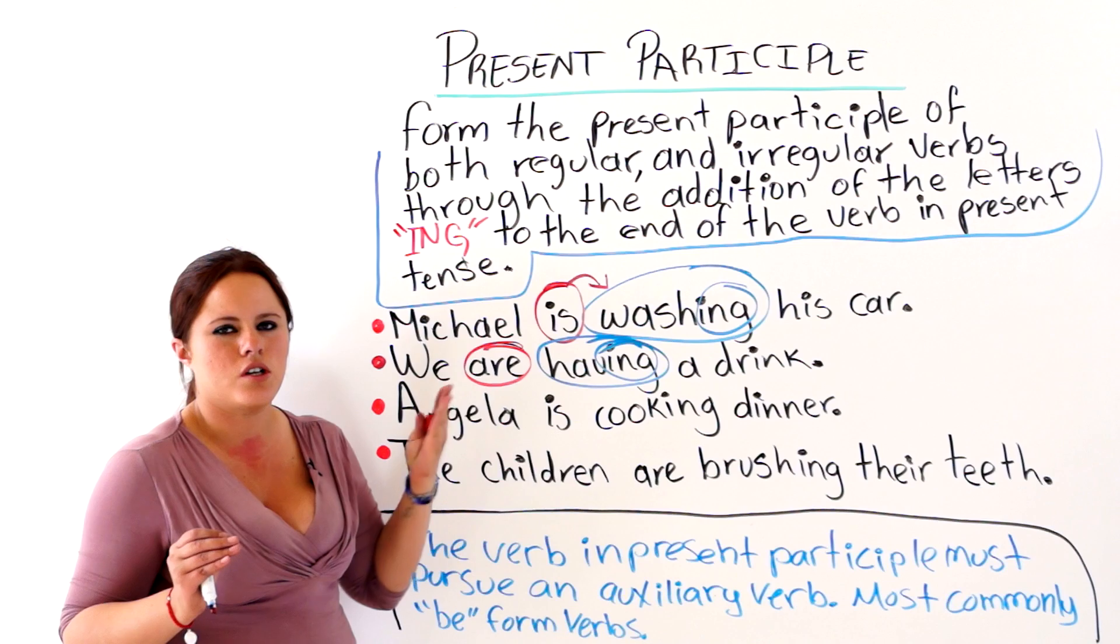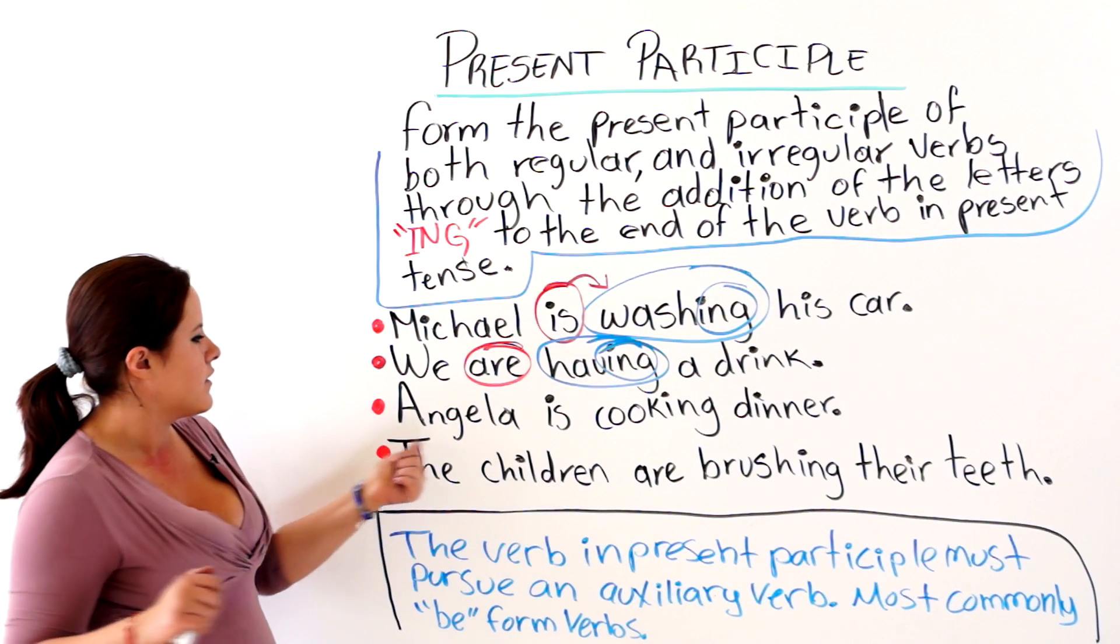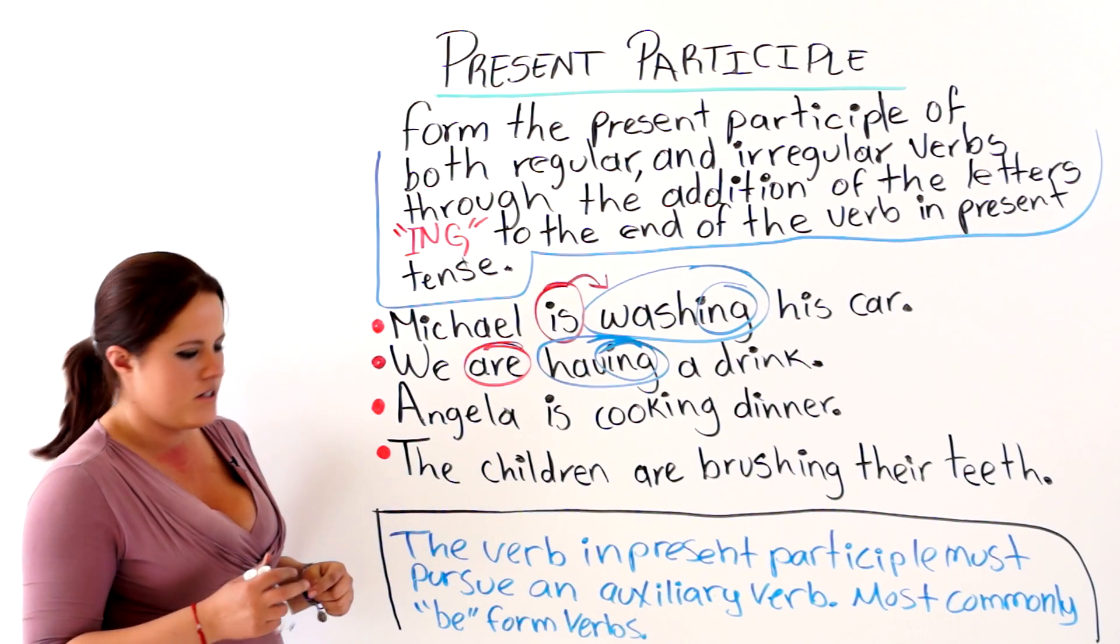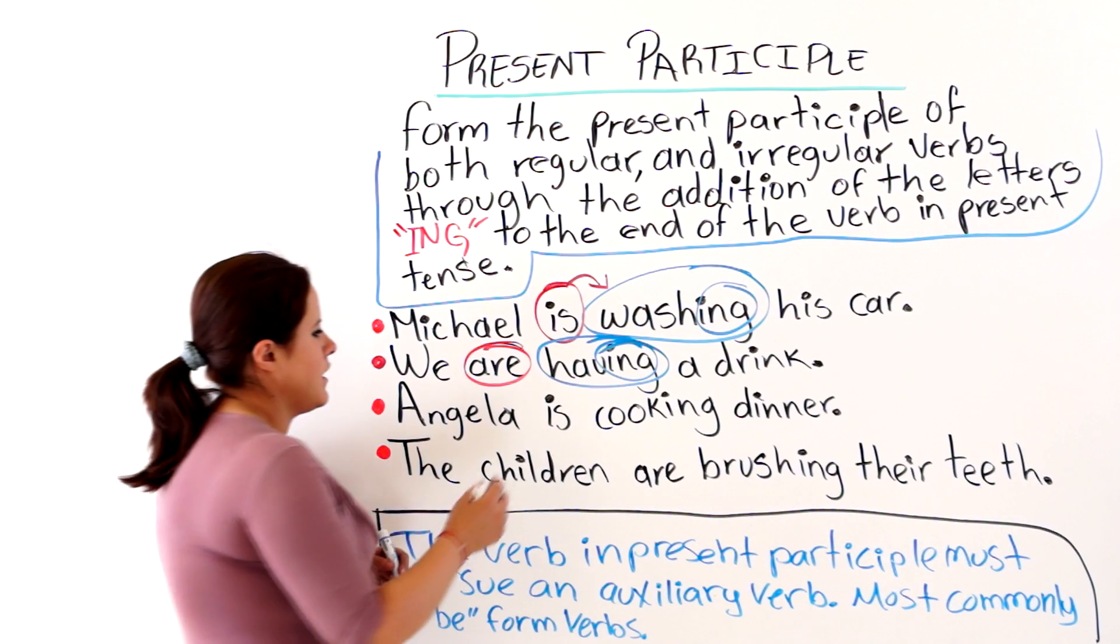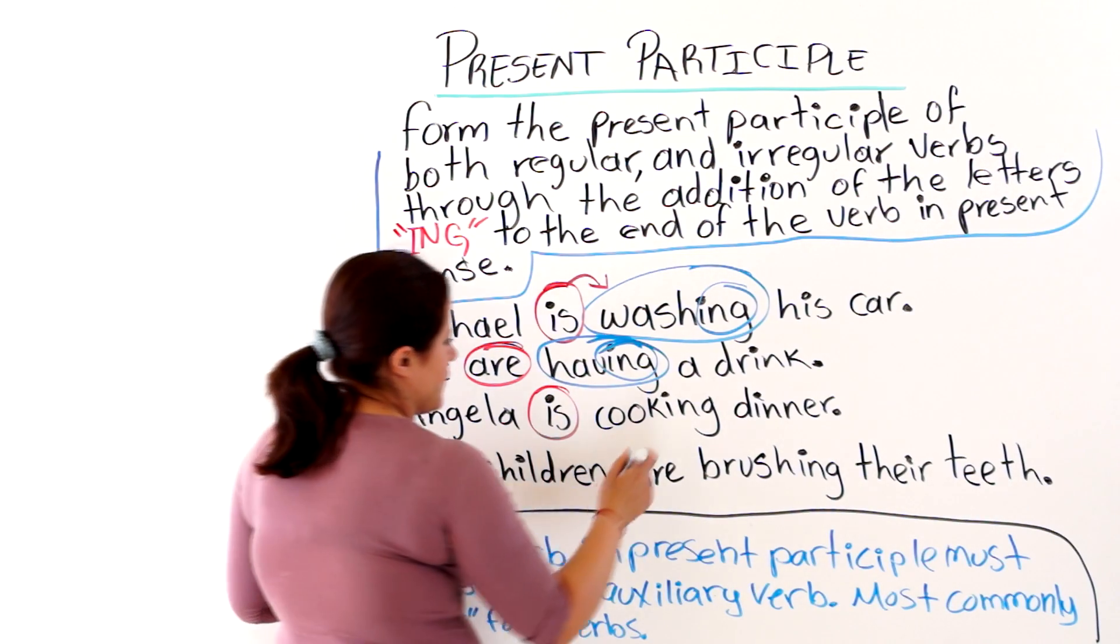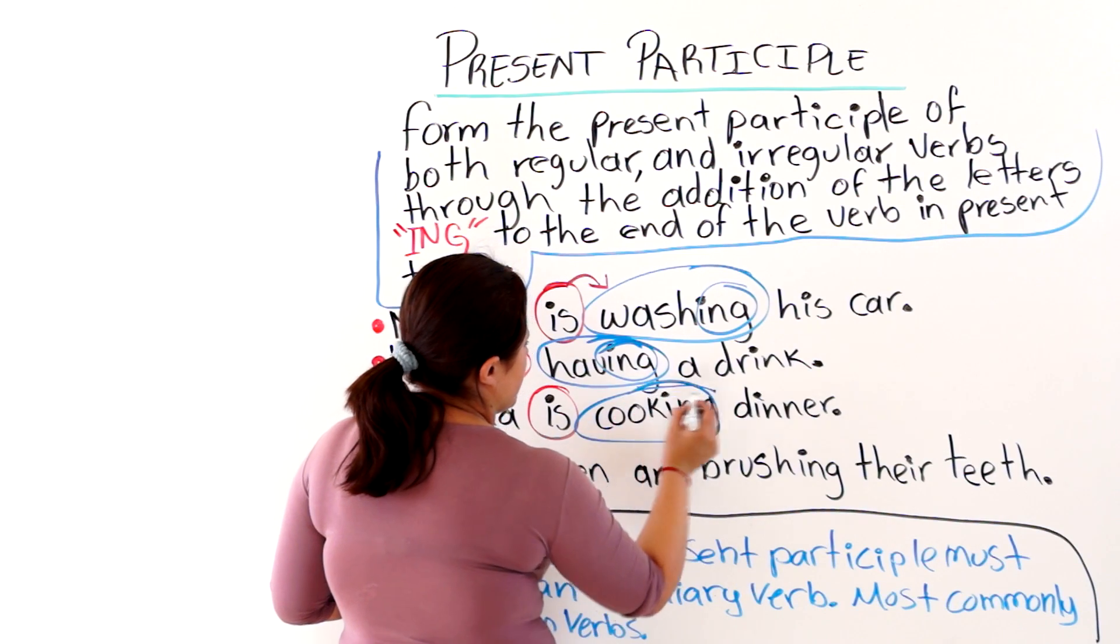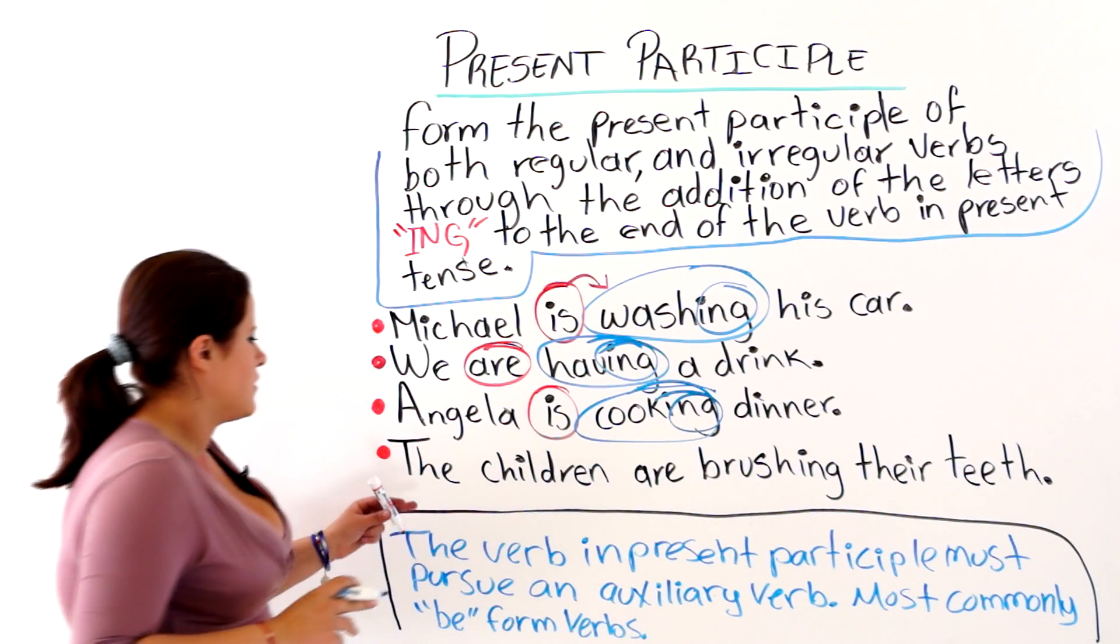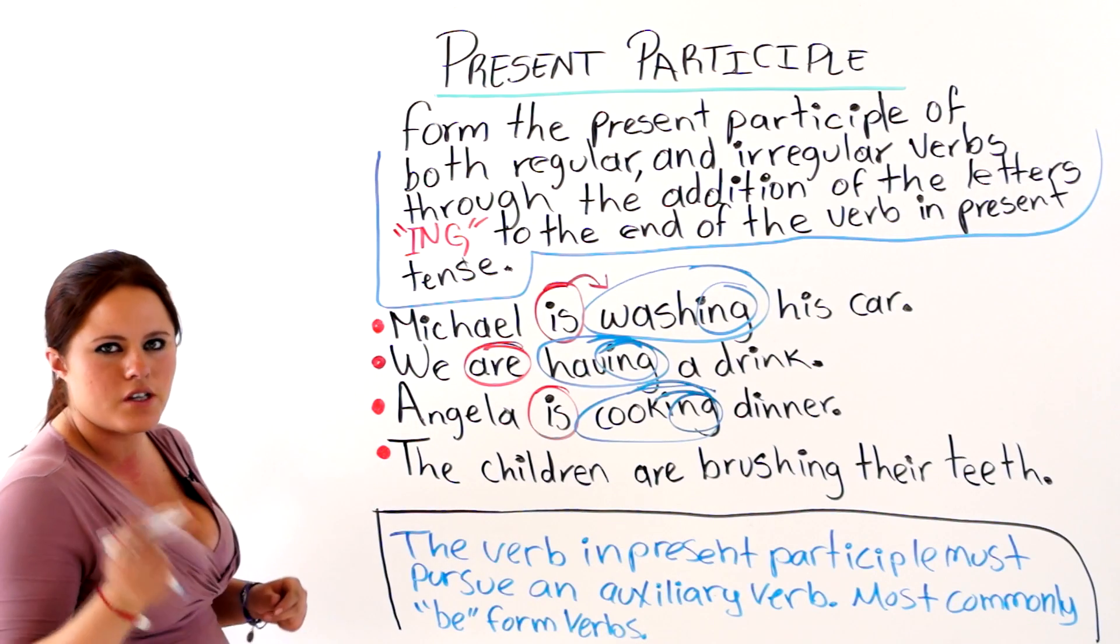Having. Washing. Cleaning. And the next one says, Angela is cooking dinner. We have the auxiliary verb. The form of verb be. We have the verb cook plus ing. The next one, the children are brushing their teeth.